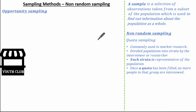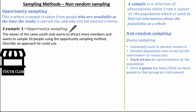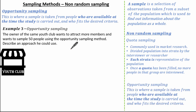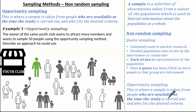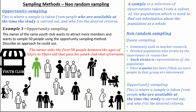Here we're looking at opportunity sampling. Opportunity sampling is where a sample is taken from people who are available at the time the study is carried out and who fit the desired criteria. Using the same youth club example, the owner still wants to attract more members and wants a sample of 50 using an opportunity sampling method. We imagine there are lots of people available when he wants to conduct his research. The answer would be: the owner asks the first 50 people between the ages of 13 to 18 years of age that pass his youth club that afternoon.